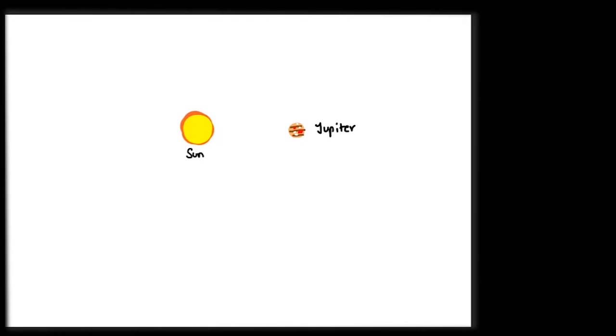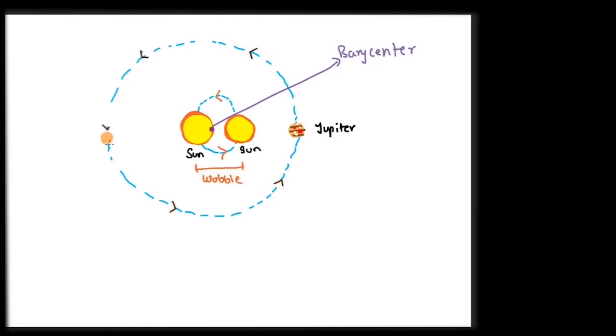In our solar system, Jupiter actually makes the sun wobble a little bit around the barycenter. It is the effect of this wobbling of the star due to the gravity of a massive planet that the methods of radial velocity and astrometry are based on.